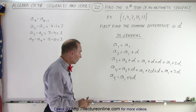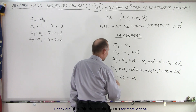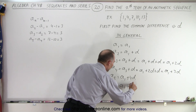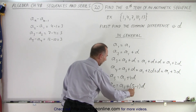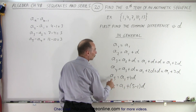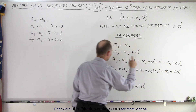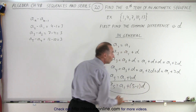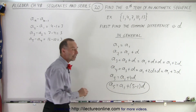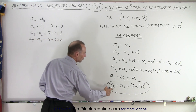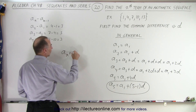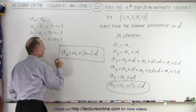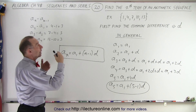For the general term, instead of writing a sub 5 equals a sub 1 plus 4d, we note that 4 is 5 minus 1. Similarly, 3 is 4 minus 1, 2 is 3 minus 1, and 1 is 2 minus 1. So we can write a sub 5 as a sub 1 plus (5 minus 1) times d. Replacing 5 with n gives us the general formula: a sub n equals a sub 1 plus (n minus 1) times d. That is how we find the nth term — any term — in an arithmetic series.